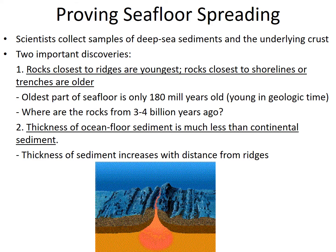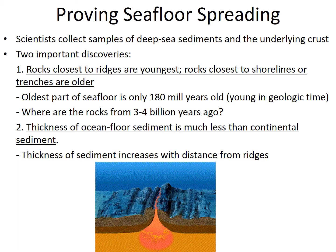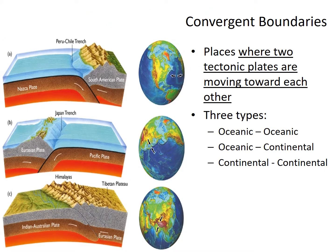We can look at where rocks from three to four billion years ago are located. We also notice that the thickness of ocean floor sediment is much less than continental sediment — the ocean floor is thinner than on continents. As you get further away from the ridges, the thickness increases.